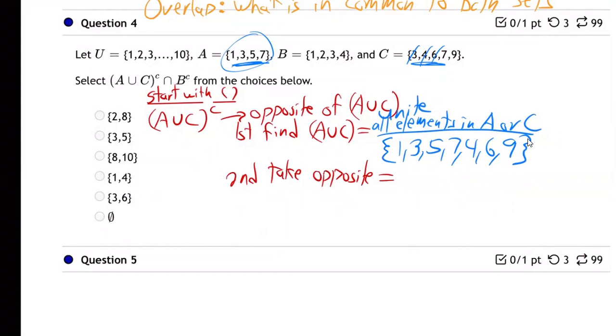So there is the union of A and C. But next, I'm supposed to take the opposite of that. How am I going to take the opposite of that? Any ideas? How are we going to do the opposite there?